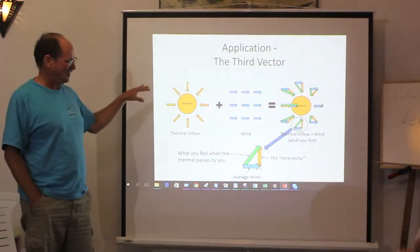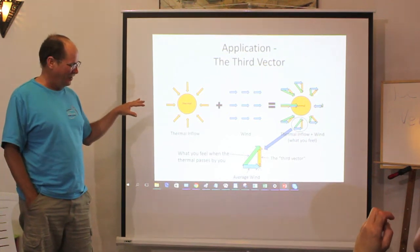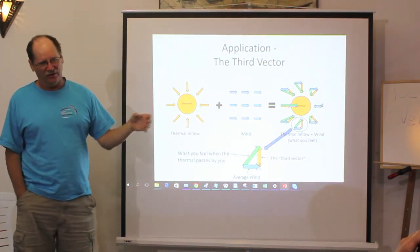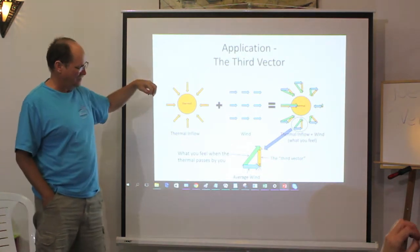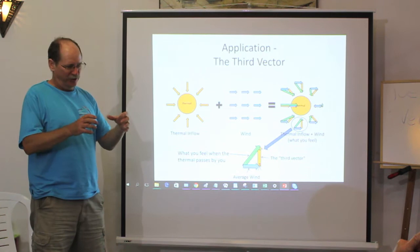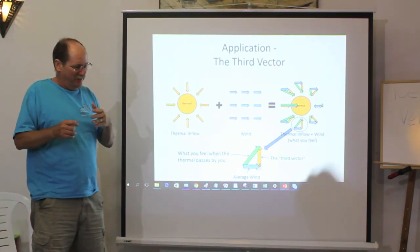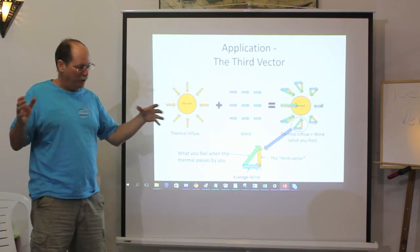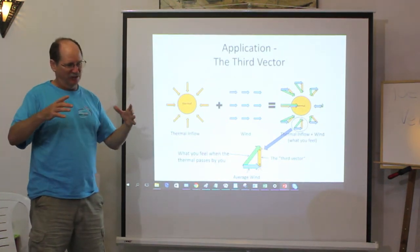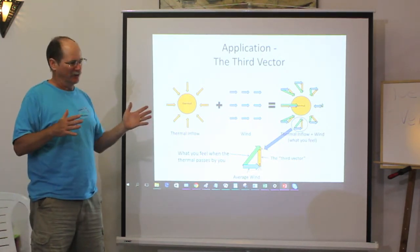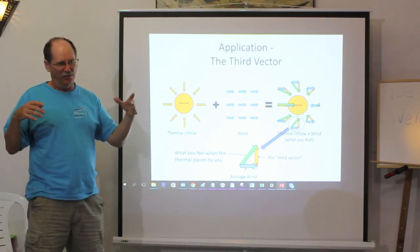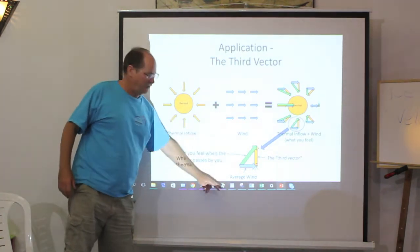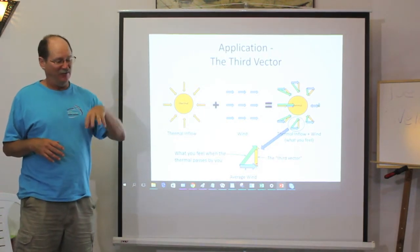This is like the freshman aspect of reading air. The sophomore level is you can start telling how far away the thermal is and how strong it is by the rate of change. A little thermal as it passes by only affects you for a very short period of time because it's only pulling air in from a very small distance. A big thermal is pulling air from a long distance away, so the change is much more gradual - it might take a couple of minutes for the wind change to happen. You can use the rate of change to understand how big the thermal is and how far away it is.